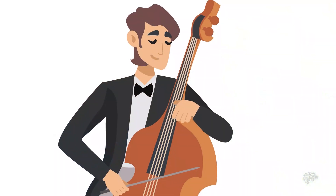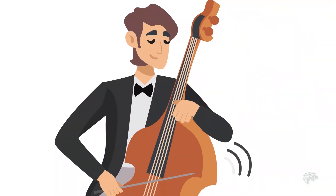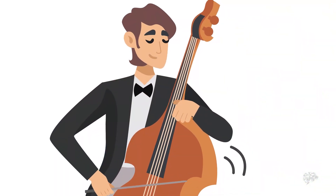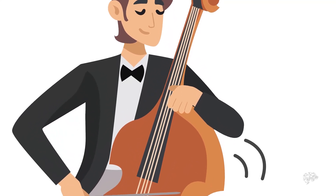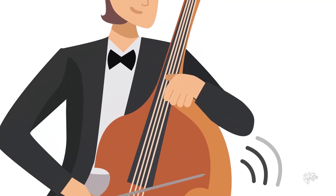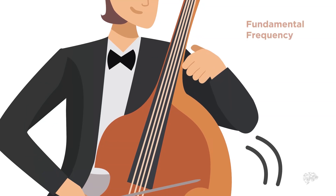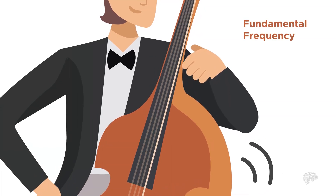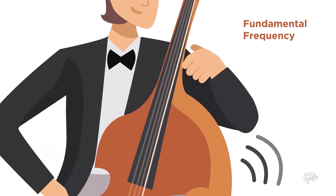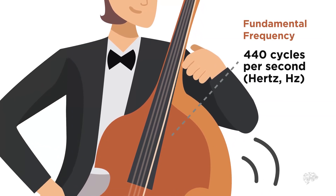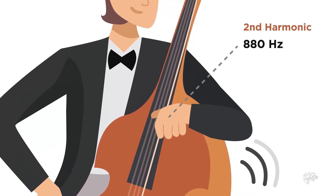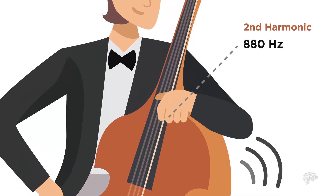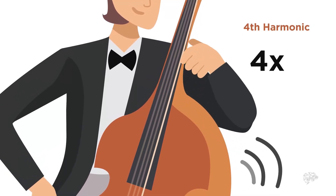It comes from a basic law of physics that when a long object vibrates — a string is plucked, a column of air vibrates — it not only gives off vibrations at a fundamental frequency, say 440 cycles per second, but also at multiples: 880, three times, four times, and so on.